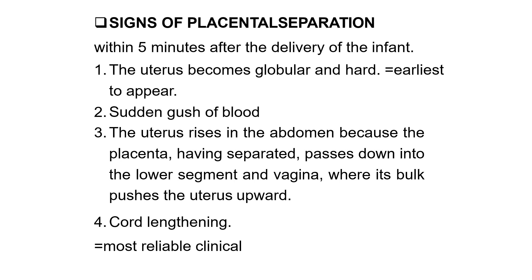With placental separation, first the uterus will become globular and hard as it contracts, and there will be a sudden gush of blood through the vagina. Third, the fundal size will increase, because after separation the placenta falls from the upper segment into the lower segment of the uterus. As it occupies space there, the uterine fundus rises slightly and a bulge over the suprapubic region becomes visible.